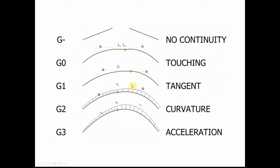G2 continuity is curvature continuity. You have G0 continuity, which is a shear or co-edge condition. The curves are tangent at that point, and they also have the same rate of curvature at that point.